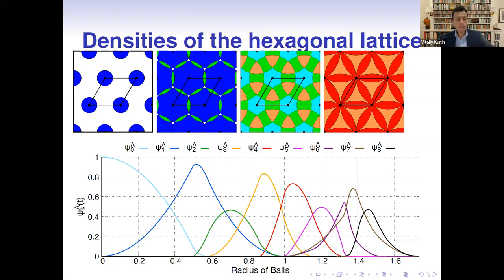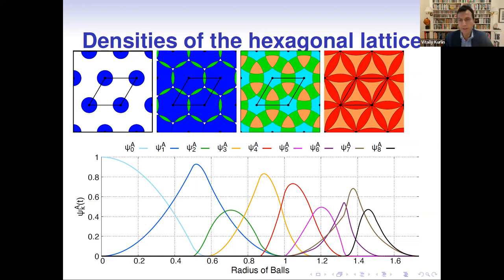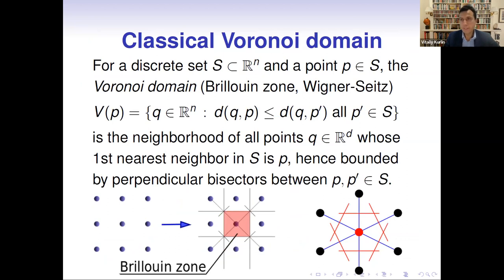The key contribution of this talk and paper is how to compute density functions not in a brute-force way by intersecting many balls — intersecting even eight disks in the plane is quite non-trivial, and in high dimensions even harder. There is a way to substantially simplify this computation and replace multiple intersections of balls with basically a single intersection, and for that we need Voronoi domains. Let me first remind the classical Voronoi domain, which has many names in different areas.